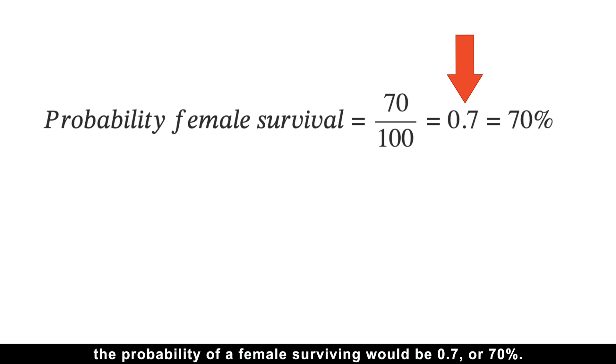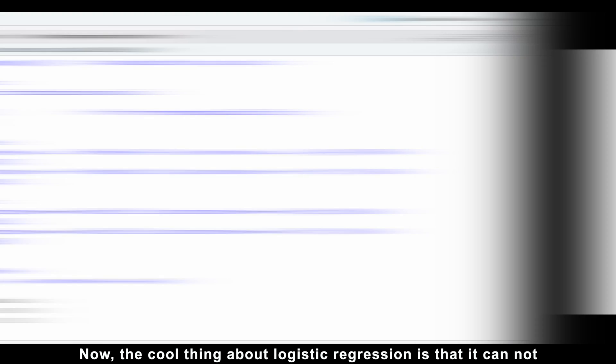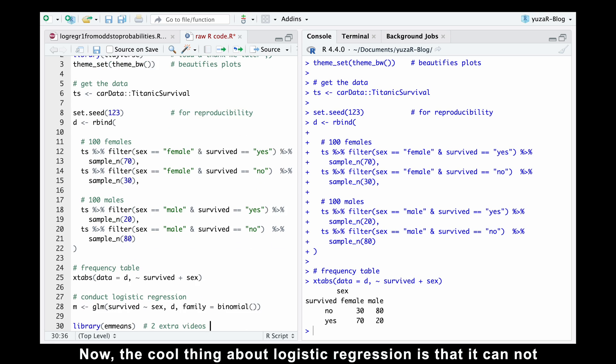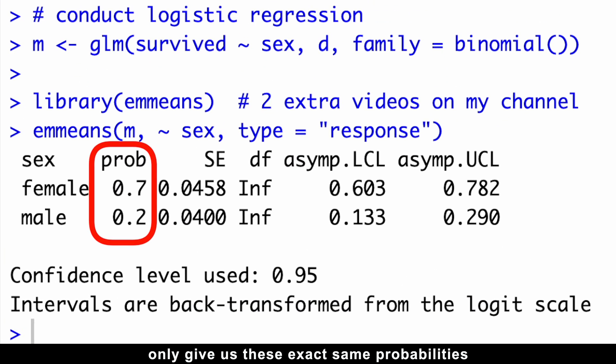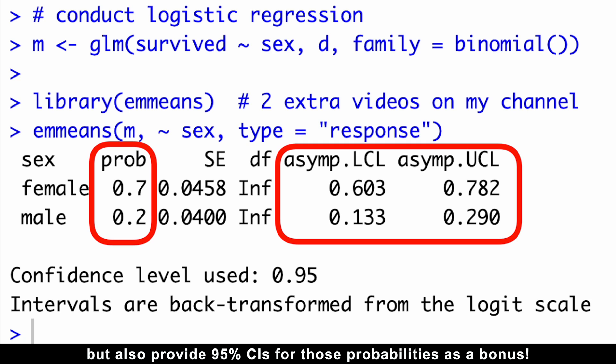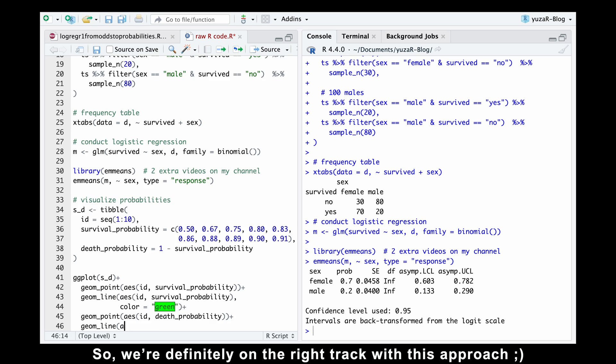For example, if 70 out of 100 females survived on Titanic, the probability of female surviving would be 0.7 or 70%. Similarly, the survival probability for males would be 0.2 or 20%. Now, the cool thing about logistic regression is that it can not only give us these exact same probabilities, but also provide 95% confidence intervals for those probabilities as a bonus.